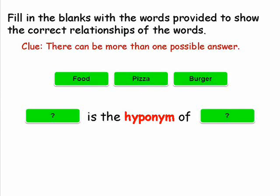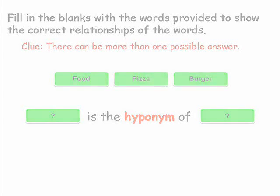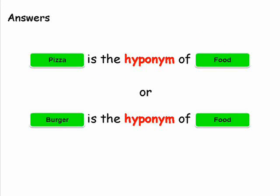Fill in the blanks to show the correct relationship between the words. Once again, there can be more than one possible answer. Pizza is a hyponym of food — it is a type of food. Burger is also a hyponym of food. Both pizza and burger are members of the group of food.